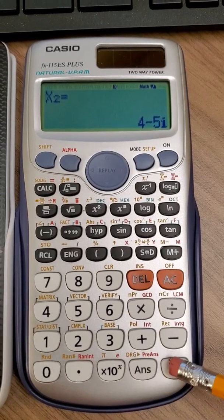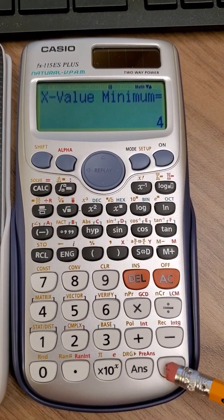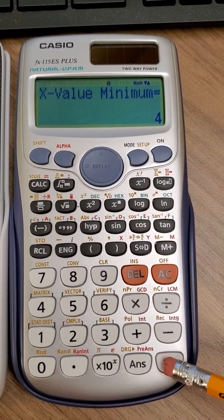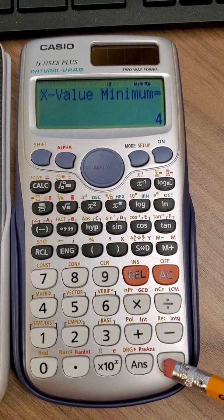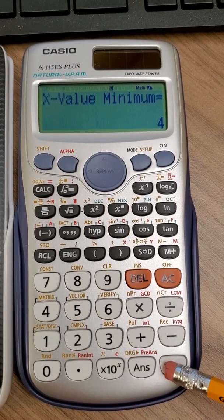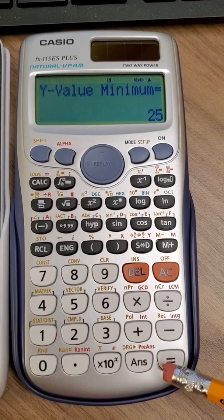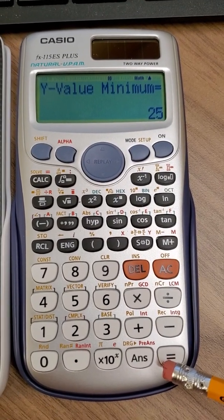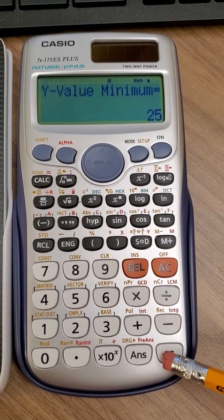And I would like to point out one other cool thing. If I hit equal again it's going to tell me the x value minimum is 4. What does that mean? That is the x coordinate of the vertex. If I hit equals again it's going to give me the y coordinate of the vertex. So this calculator not only gives me the solutions but also gives me the vertex of the parabola.